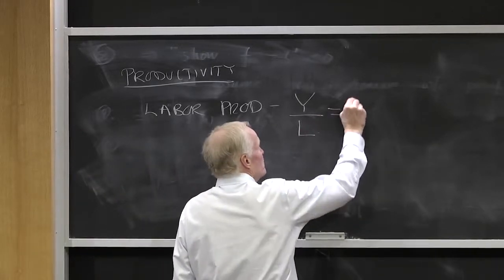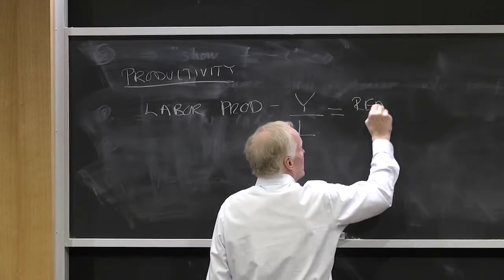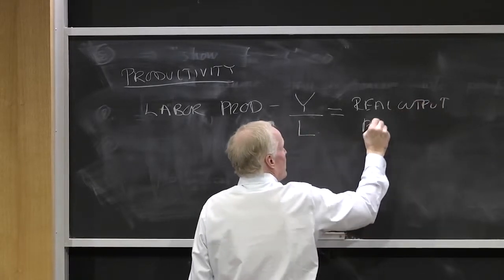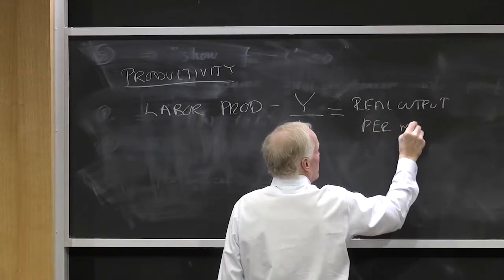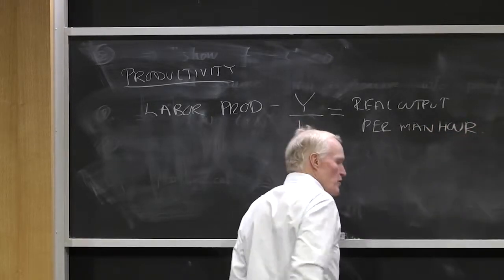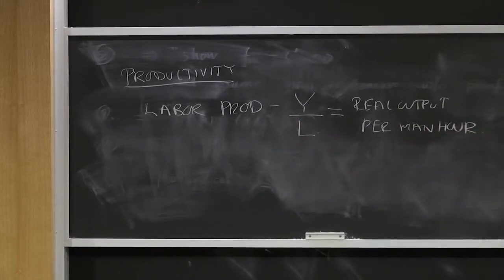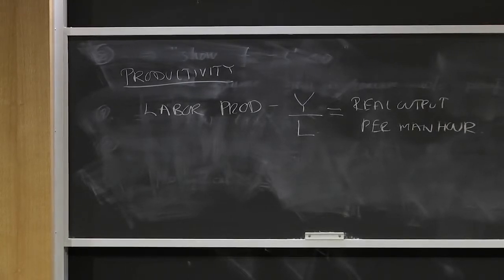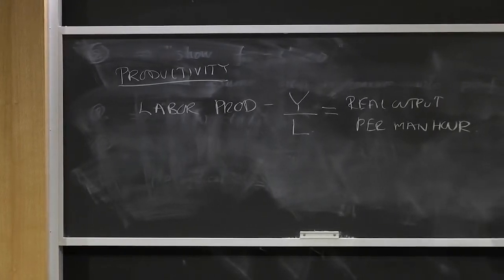It's usually done in real terms, real output per man-hour. So that's one measure of productivity. It's equal to the average product of labor. It's how much, on average, does labor produce? Output divided by labor is the average product of labor.